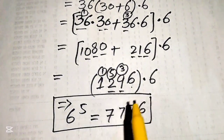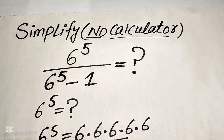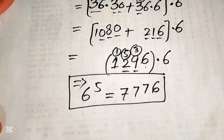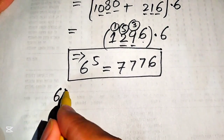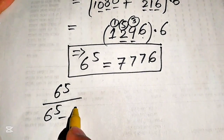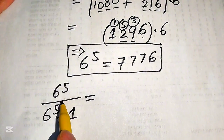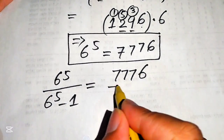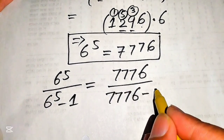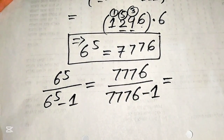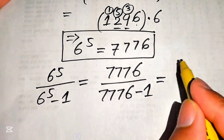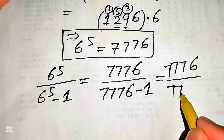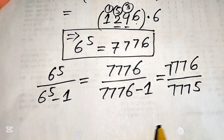Now we move backward and copy down our given question statement. This is 6 to the power of 5 divided by 6 to the power of 5 minus 1. We put the value of 6 to the power of 5 in both the numerator and denominator, writing it as 7776 divided by 7776 minus 1. When we subtract, the denominator becomes 7775.